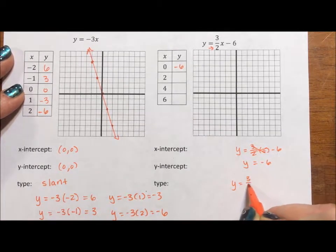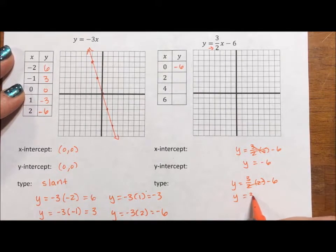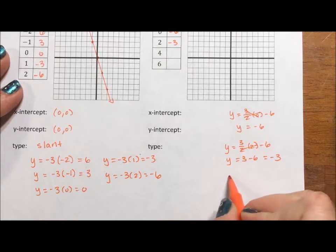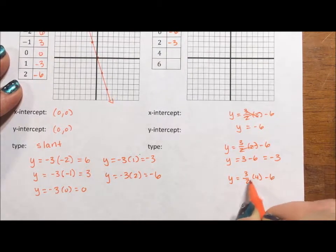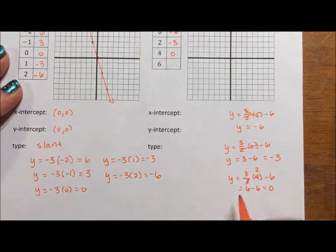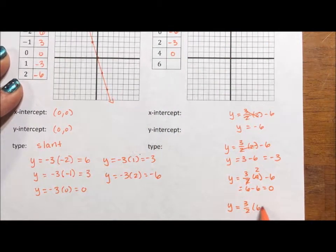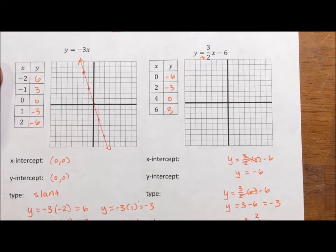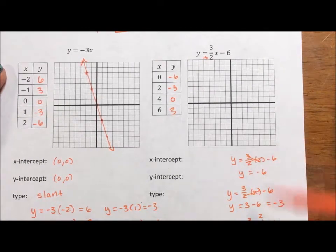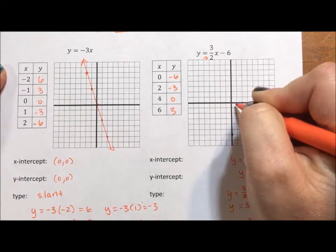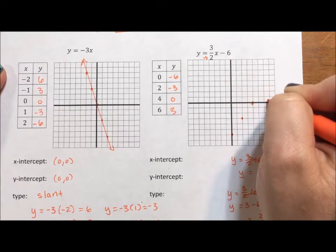Y equals 3/2 times 2 minus 6 — y equals 3 minus 6; 2 divided by 2 is 1. Y equals 3/2 times 4 minus 6 — 2 goes into 4 twice, 3 times 2 is 6, 6 minus 6 is 0. And y equals 3/2 times 6 minus 6 — 2 goes into 6 three times, 3 times 3 is 9, 9 minus 6 is 3. So I only needed 3 points; I did 4 just because it's so much fun. So: (0, -6), (2, -3), (4, 0), (6, 3).